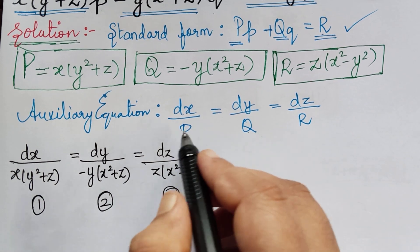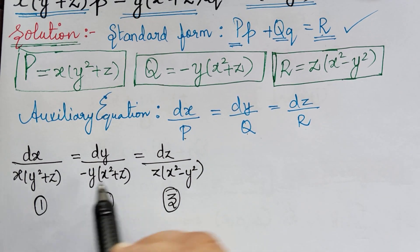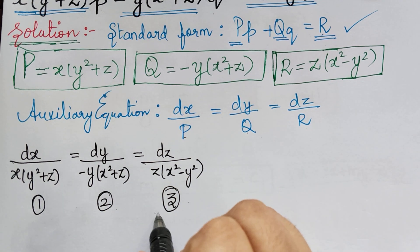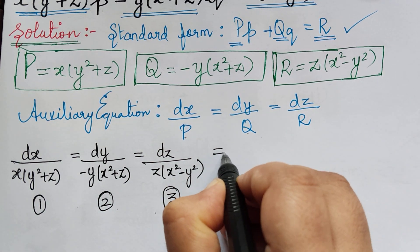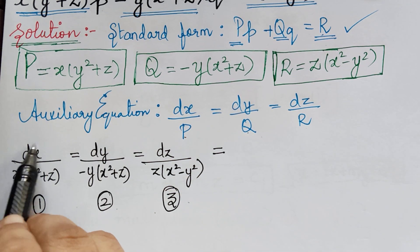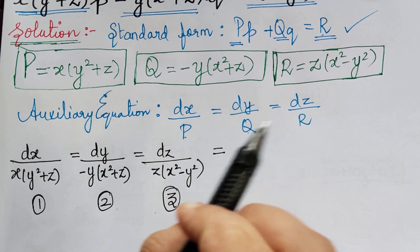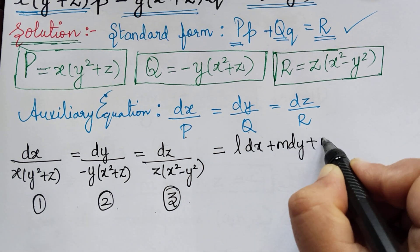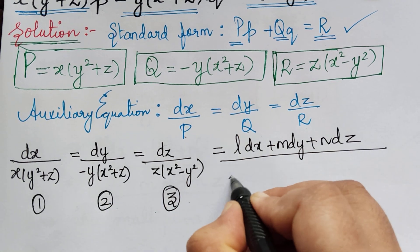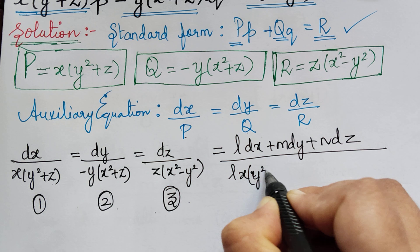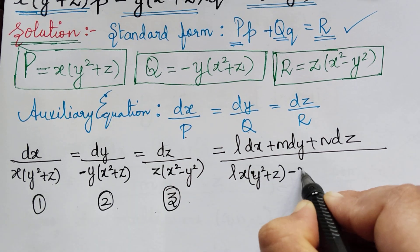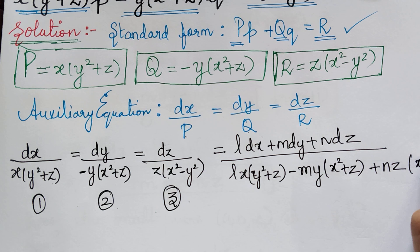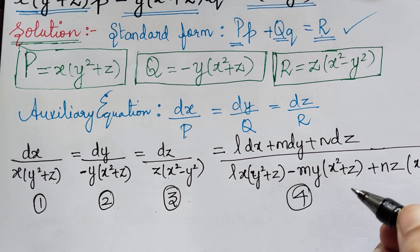After substitution, we understand that the method of grouping is not going to work here. So we use the method of multipliers, forming a fourth ratio by choosing multipliers L, M, and N. The fourth ratio is (L dx + M dy + N dz) divided by [L·x(y² + z) − M·y(x² + z) + N·z(x² − y²)].